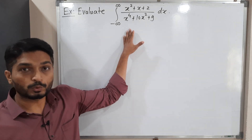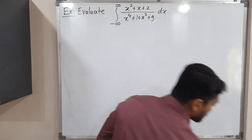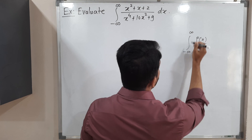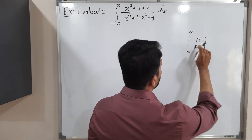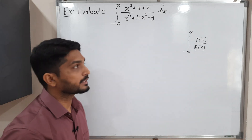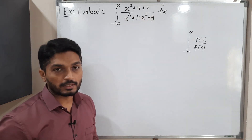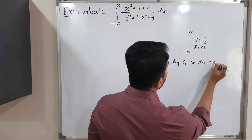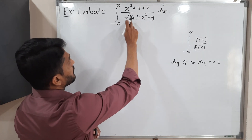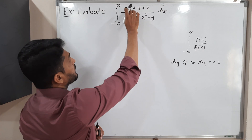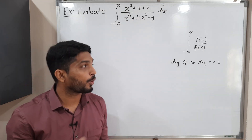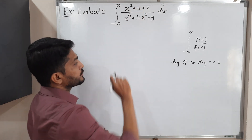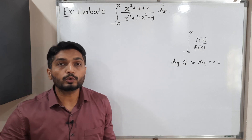There is a separate procedure to find such types of problems. We should have integration of the form from minus infinity to infinity of P(x) over Q(x), where P(x) and Q(x) are polynomials in x. The degree of Q must be greater than or equal to the degree of P by at least 2. Here the degree of the denominator is 4 and the numerator is 2, so the difference is 2.